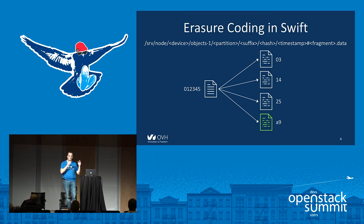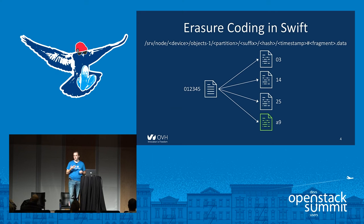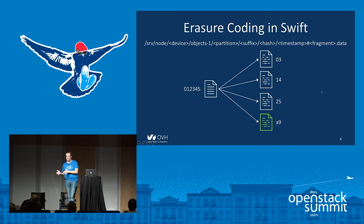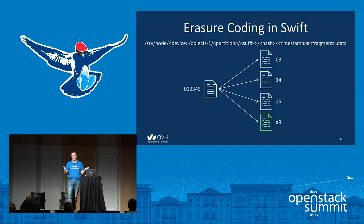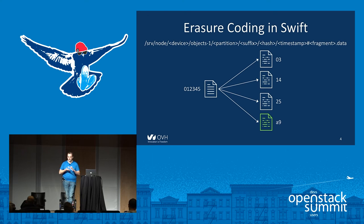With erasure coding you can choose a different configuration — for example, ten data fragments and two parity fragments. This gives you an overhead of 1.2 but better durability, almost the same as with three replicas. Because if you lose two fragments, you can still access your object. So you can control both durability and overhead. However, every time you access your object you have to fetch all fragments to rebuild it, so you can't scale parallel downloads the way you can with replica. Also, all the computation of fragmenting and calculating parity is done on the proxy, adding some extra CPU consumption — not a lot, but you have to account for it.